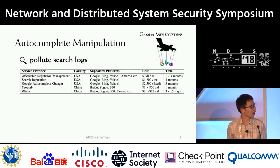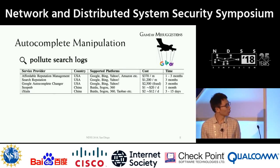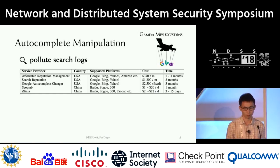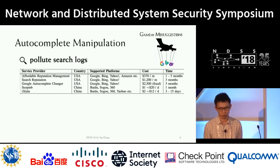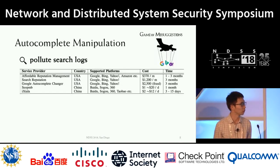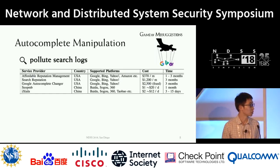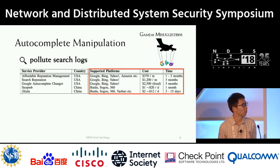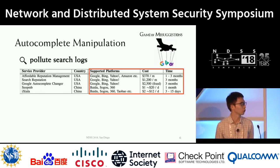So one would ask: how can this manipulation happen? Based on our study, we find this can be done by polluting the two sources where the autocomplete comes from. For the first type of manipulation, the key strategy is to pollute the search logs by using crowdsourcing. We found this had been done systematically with services available publicly. Here is a list of six providers we found. They target almost all major platforms and take about one to three months to manipulate keywords, at a cost of $2,500.